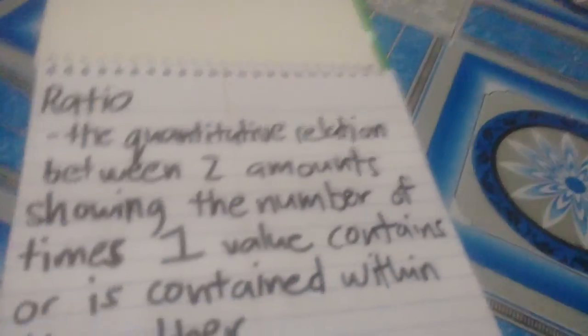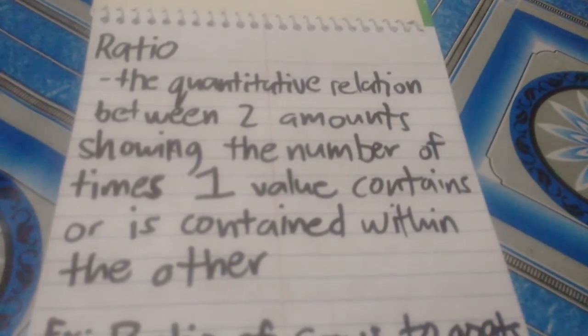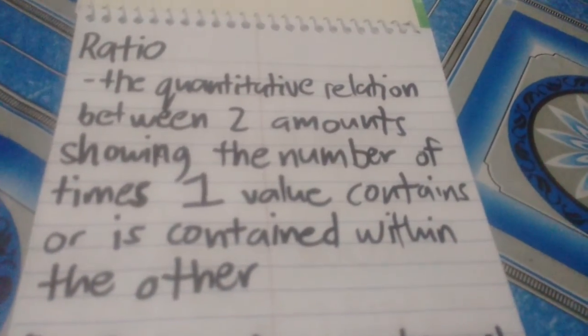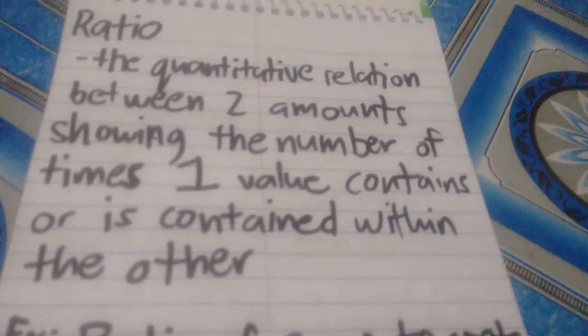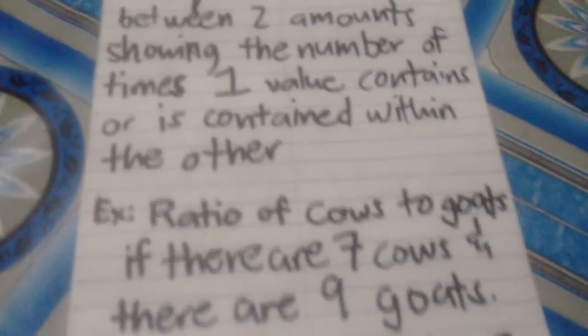First, let's define what a ratio is. A ratio is the quantitative relation between two amounts, showing the number of times one value contains or is contained within the other.